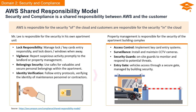On the other side of the coin, the property management is handling the bigger picture — the entire apartment building complex. They've got their own set of responsibilities: access control (think key card magic, making sure only the right folks get into the building), surveillance (CCTV cameras keeping tabs on what's happening around the complex), security guards as on-site guardians ready to tackle any potential threats, and a secure entry gate for vehicles managed by the building's security team. So, the AWS Shared Responsibility Model is a bit like this apartment deal — you've got your part, AWS has theirs. It's a teamwork thing, and just like Mr. Lee and the property management, everyone's got their role to play in keeping things secure.